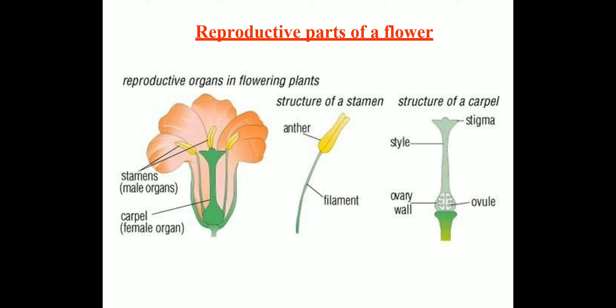The stamen has two parts: the anther, which is bilobed, and the stalk-like structure called the filament. The carpel has stigma, style, and ovary. When we cut the ovary we can see a transverse section (TS) showing the arrangement of ovules in the ovary, and a longitudinal section (LS) also shows the arrangement of ovules. Carpel is also known as the pistil, the female reproductive part of the flower.